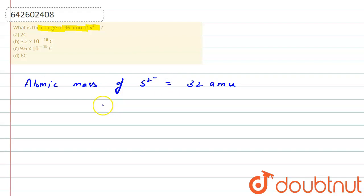Right now, number of sulfide ions when there is a mass of 96 amu is equal to 96 amu divided by 32 amu, which is equal to 3 ions.